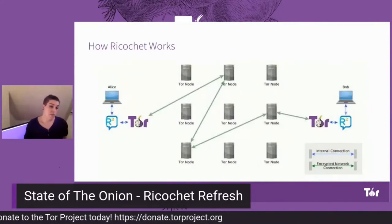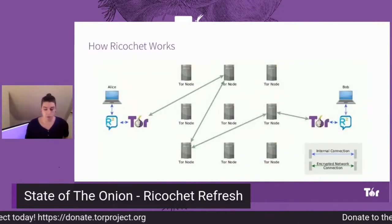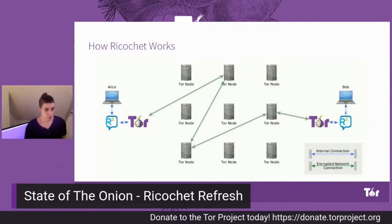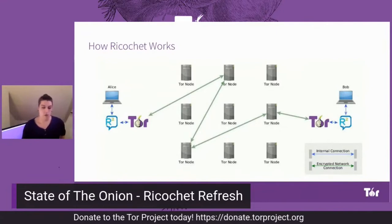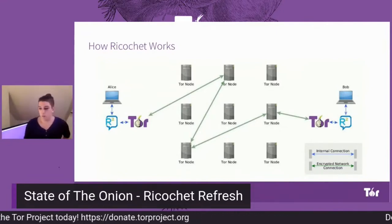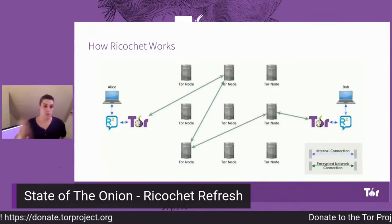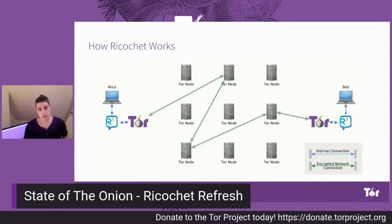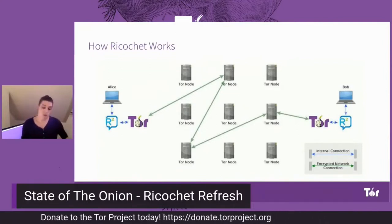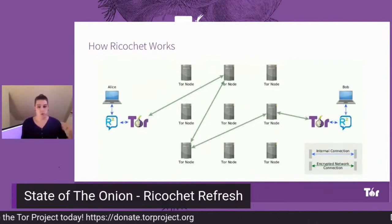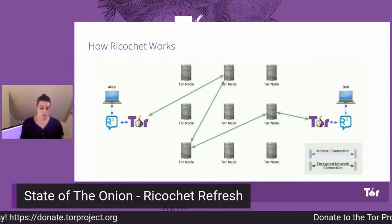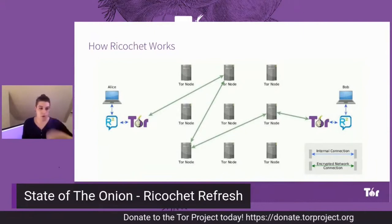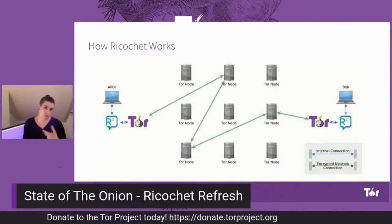Basically, how it works is that whenever you launch Ricochet, you create a Tor hidden service, and that gives you a URL-looking identifier which you can share with your friends offline. Once they have that, they can launch their own instance of Ricochet, create their own hidden service, put your name in, and you do a little handshake. This basically allows you to chat anonymously with no metadata whatsoever. The only people who know about you and who you're talking to are the participants.